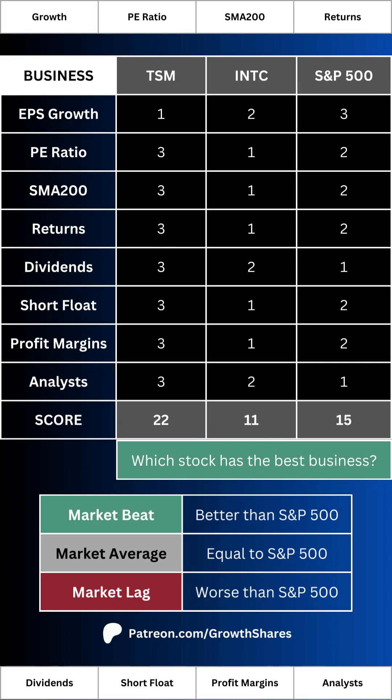All those points at the bottom right of the screen for each metric — that's how I grade each of our three stocks. What you see here is the total score, which translates to ranking the best and worst business. If the company has the highest score against its competitor and the S&P 500, we can say it has the best business — that means it's a market beat. A lower score means it's a market lag, and if it has the same score it's at market average, so from a business point of view it doesn't matter if the scores are equal.